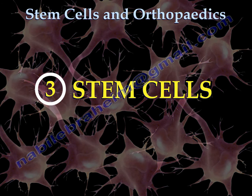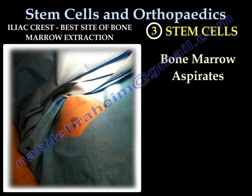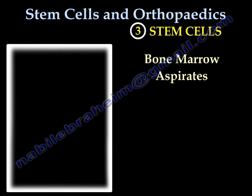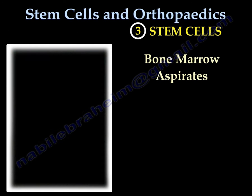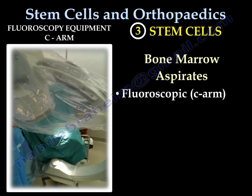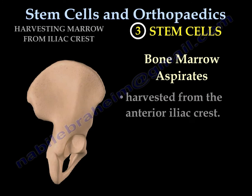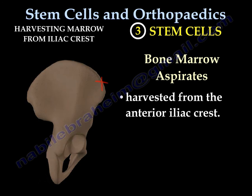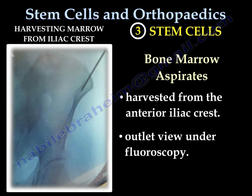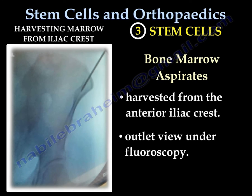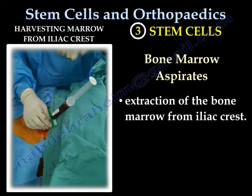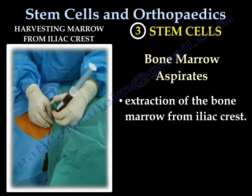You take the stem cells from bone marrow aspirates from the iliac crest — this is the best site. These are simple tools to take the bone marrow aspirate from the iliac crest. We use fluoroscopy both for the iliac crest and the extremity. You can harvest the marrow from the anterior iliac crest using the outlet view under fluoroscopy.